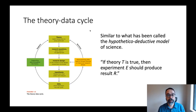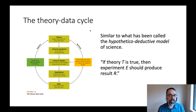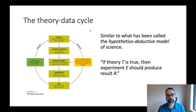Your book talks about something called the theory-data cycle, which is a sort of abstraction of how the scientific process works. Philosophers have called this the hypothetical-deductive model, which is a fancy term for this idea. You can start anywhere in this cycle — let's start with a theory, which is a set of statements about how variables relate to each other.